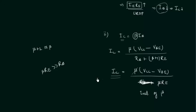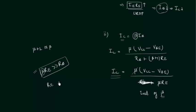The collector current is independent of beta, so there is no effect on IC if you change the transistor. The next topic is the disadvantages of this circuit. To make IC independent of beta, the condition β·RE must be greater than RB must be satisfied, but beta is often unknown. So we must make RE very high or RB very low. A very high RE requires a high biasing potential, increasing cost. A very low RB reduces the reverse bias of the collector-base junction. These are the disadvantages of this configuration.